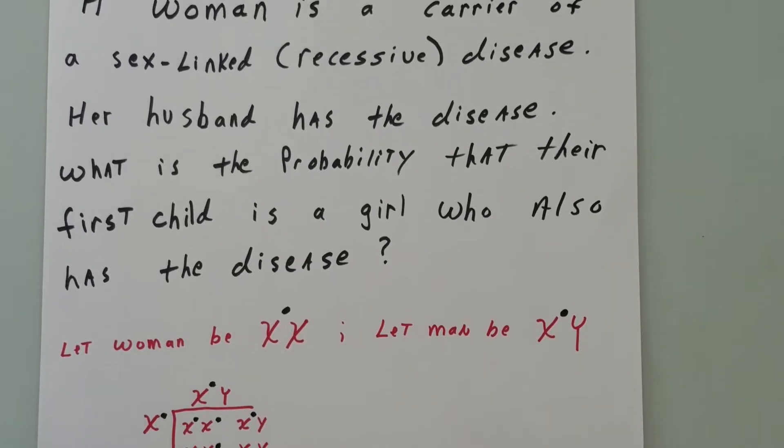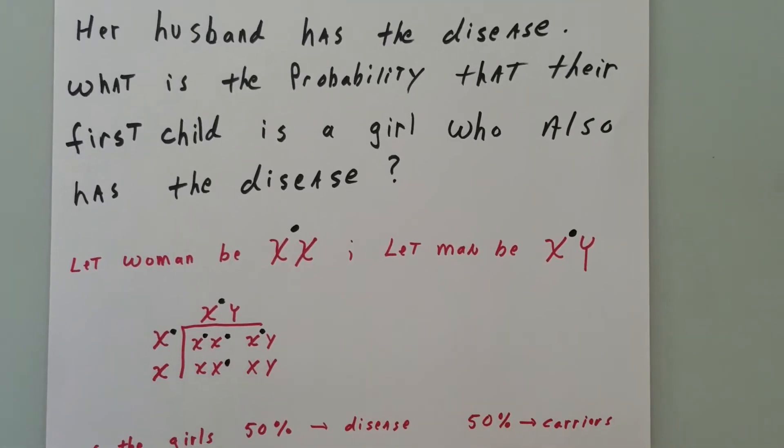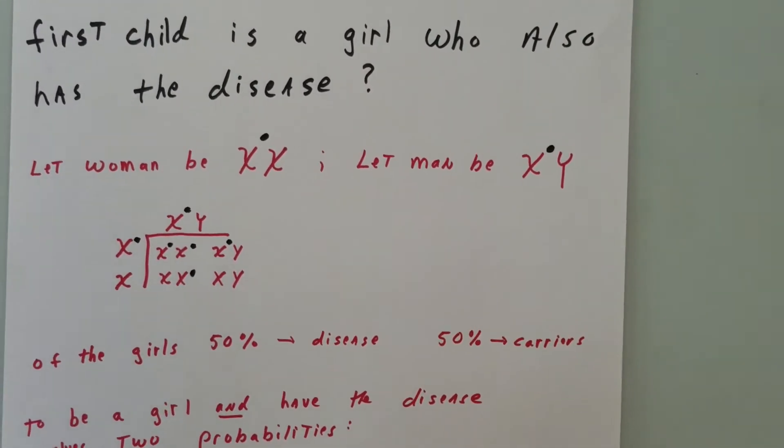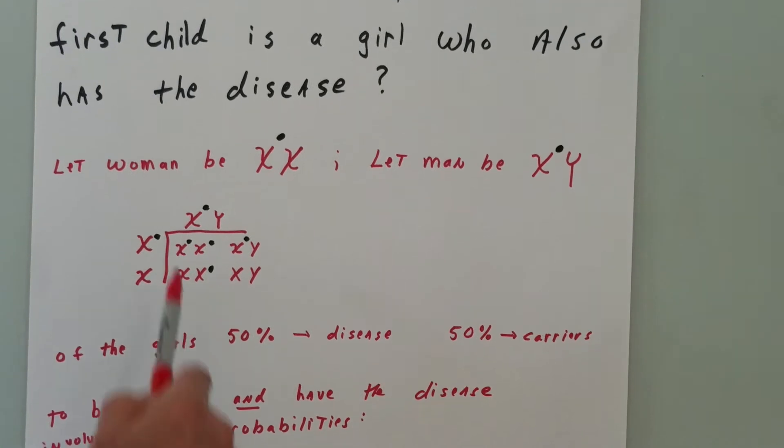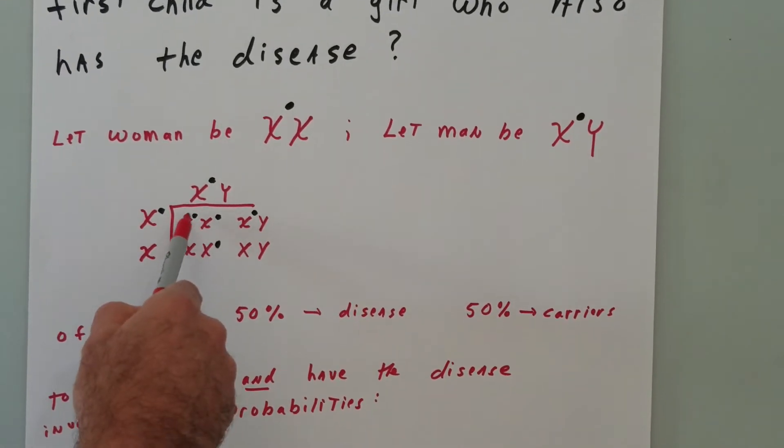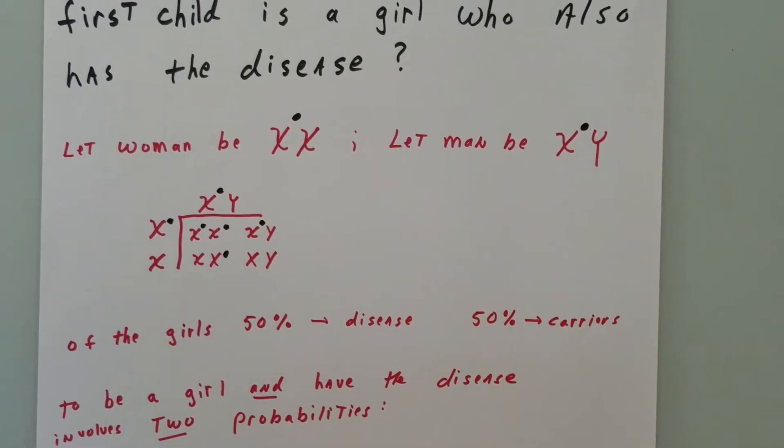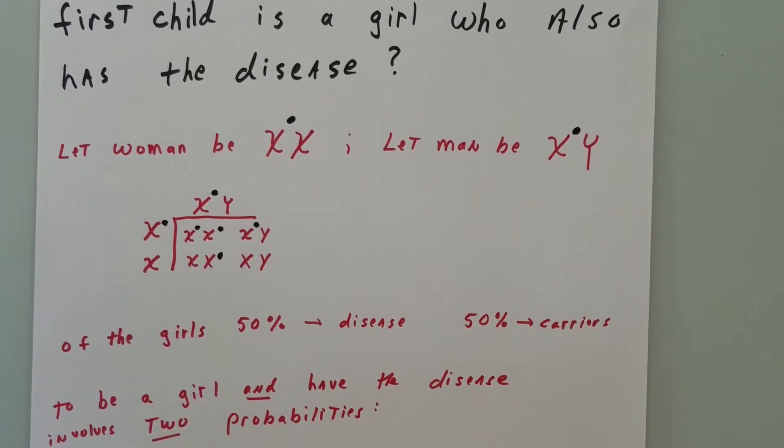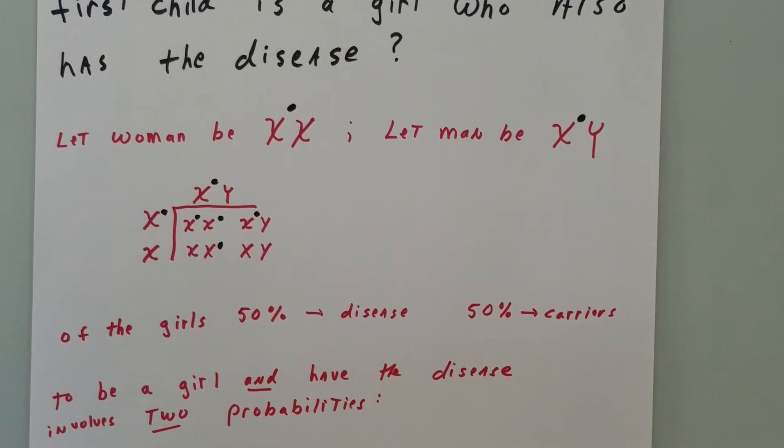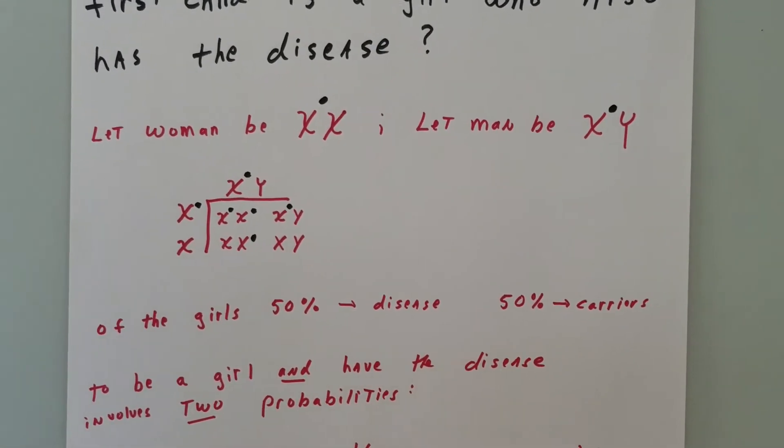So we're going to have a carrier woman who is X with a little dot on it, crossed with X-dot Y, and we're going to do the Punnett square. As you can see from the result of the Punnett square, we're going to get a girl who has the disease. Notice she needs both copies to have the disease if it's sex-linked recessive. Most X-linked or sex-linked diseases are recessive.